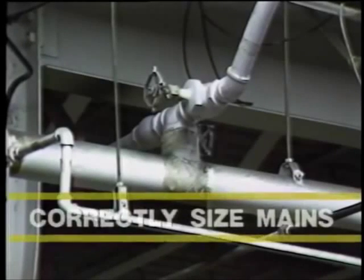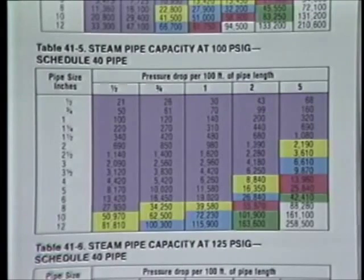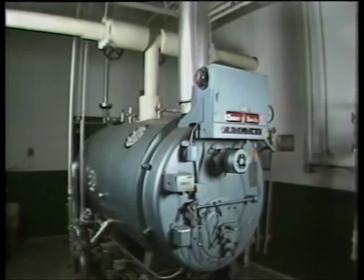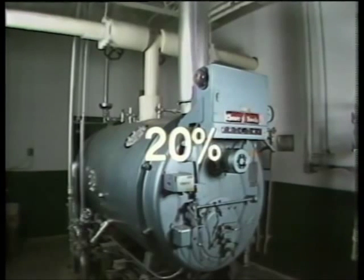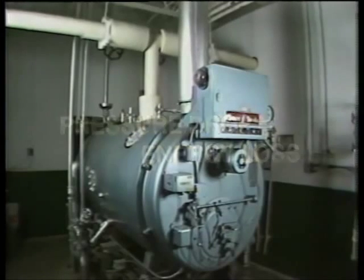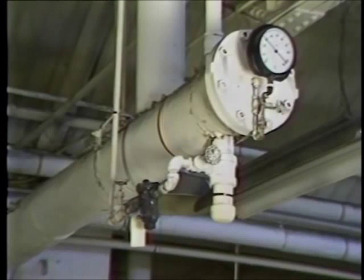Steam mains must be correctly sized to ensure efficient operation and to minimize maintenance costs. The size of the steam main piping is determined by the allowable pressure drop and velocity for a specific pressure. As velocity increases, so do noise levels, erosion potential, and the amount of pressure drop. The greatest pressure drop in the distribution system should not exceed 20% of the maximum boiler pressure, radiation and friction losses included. Remember, pressure drop is energy loss. Although the initial cost may be higher, oversizing steam mains to reduce velocities and pressure drops can help minimize future trouble and expense in your plant's operation.